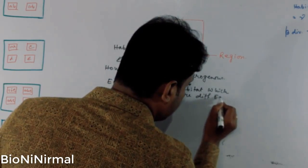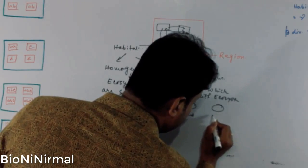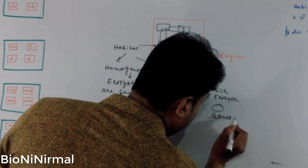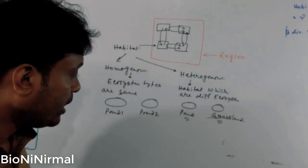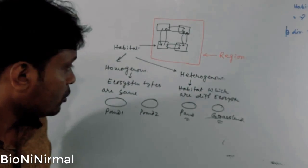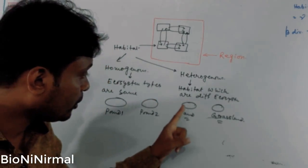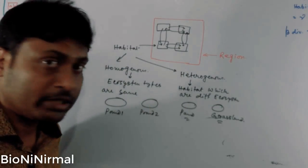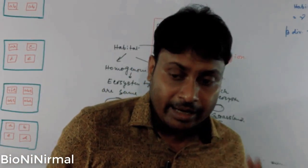Heterogeneous habitats are those which are different ecosystems — for example, a pond and a forest or grassland. These are different habitats, so they are called heterogeneous habitats. The species found in the pond cannot be found in the grassland. So heterogeneous habitats are those which represent different ecosystems in a region.